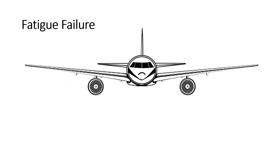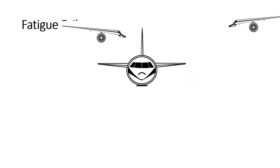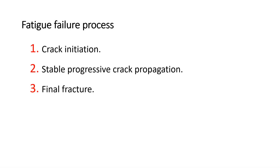Fatigue is a process of progressive localized permanent structural change. It occurs in a material subjected to conditions that produce fluctuating stresses or strains at some point. The fatigue failure process can be divided into three stages: crack initiation, stable progressive crack propagation, and final fracture.